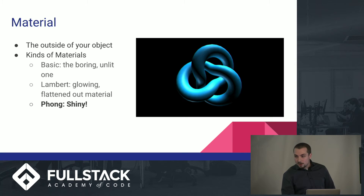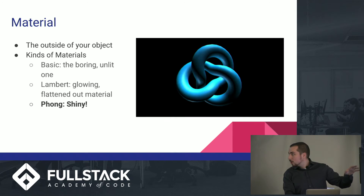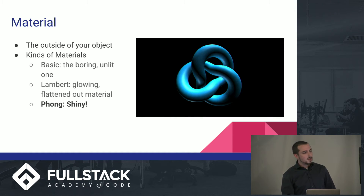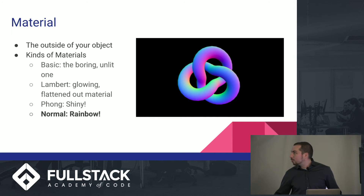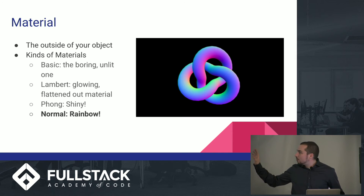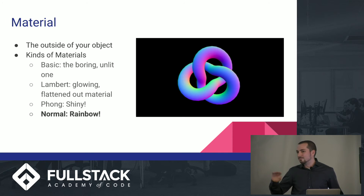Then there's Phong, which is shinier. Where Lambert is kind of a matte look, Phong reflects the light much better. It also needs light to be able to see it. There's also Normal. Normal is similar to Basic in that it does not need light — you can see it no matter where you put it, whether light is shining on it or not. However, you can't change the color. It's always going to be this kind of cool rainbow-y looking mix, and you can't really alter it.